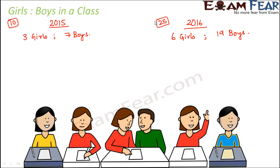So the total number of students became 25, up from 10 earlier. Just by looking at the numbers, we see that the number of girls increased and the number of boys also increased. If I ask whether the ratio of girls compared to boys increased in 2016 — if you compare just by difference, subtracting the two numbers, three girls before and six girls now, six minus three is three. So you can say the number of girls increased by three.